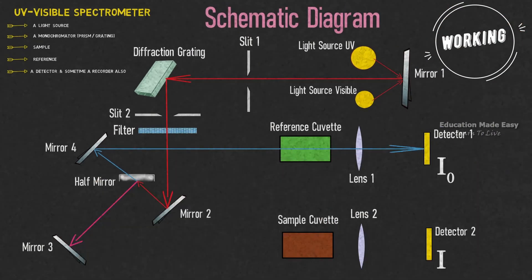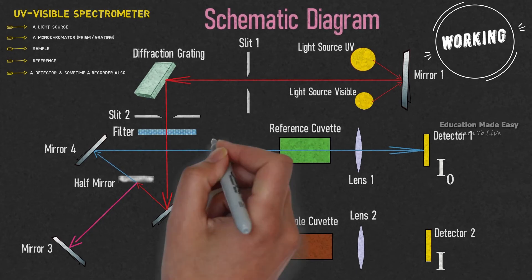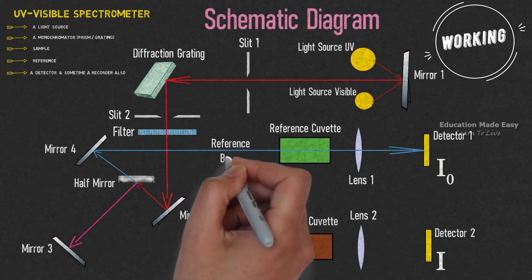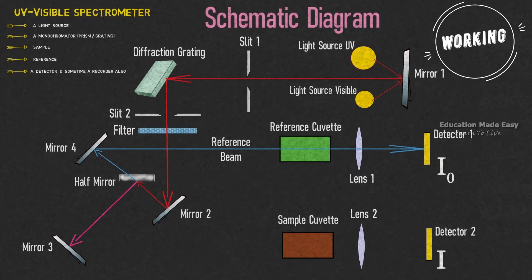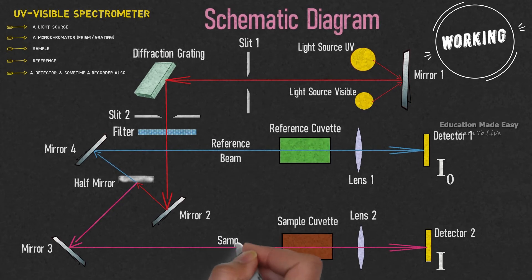Mirror 4 reflects the light beam towards detector 1 through the reference cuvette and lens 1. As this beam is passing through the reference cuvette it is called the reference beam. At mirror 3, the light is reflected to detector 2 through the sample cuvette and lens 2. The light beam received at detector 2 is passing through the sample cuvette so it is called the sample beam.